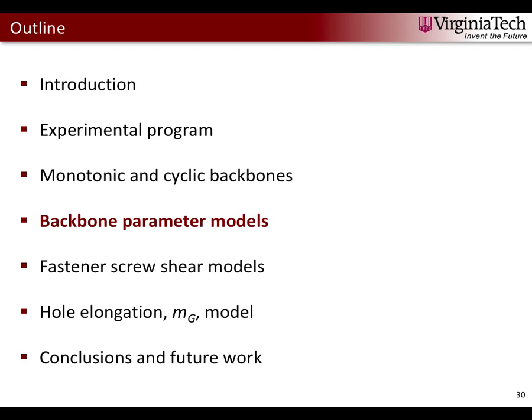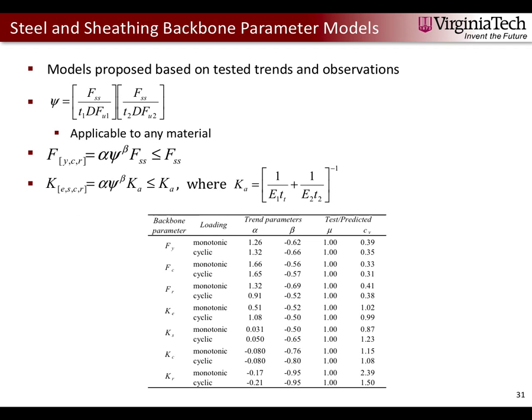Now I'll talk about our parameter models obtained from the backbones. We developed a non-dimensional parameter ψ to describe any connection material test, applicable to any material given known material properties. ψ is the relationship between fastener shear strength (FSS) and ply bearing strain — the ply thickness times thread diameter times ultimate stress. An exponential fit with parameters alpha and beta fit our data best. We developed models for force normalized by FSS and stiffness normalized by Ka — the axial stiffness of plies treated as springs in series assuming a rigid connection.